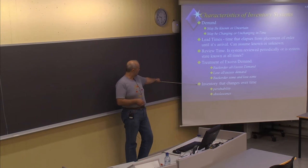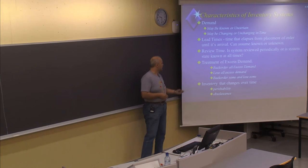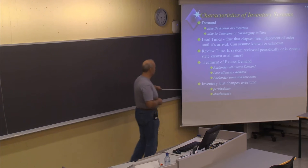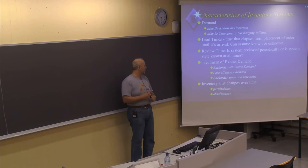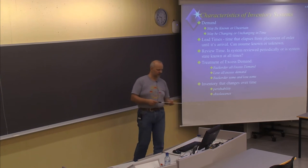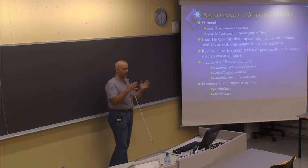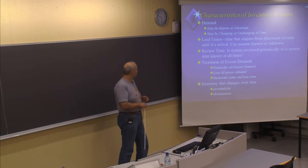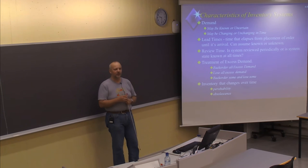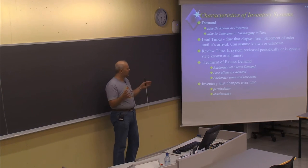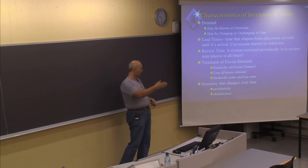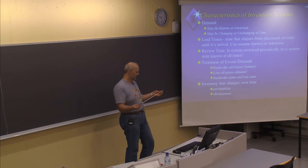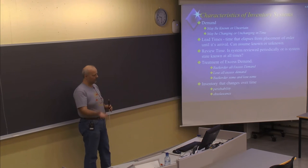We should also mention inventory which changes over time. Food is a very good example — it is perishable and if you can't store it for a very long time, it will not be useful anymore and you have to throw it away. There is a maximum limit on how long you can store different types of products. So it's not always possible to use the order size and stock size you would want, because the product cannot be stored as long as the models would suggest.